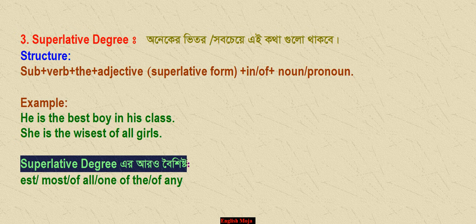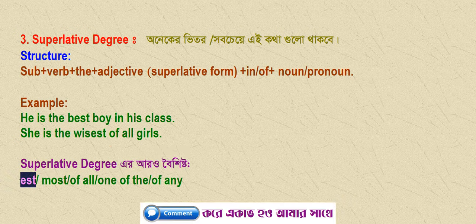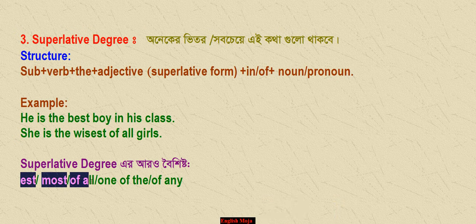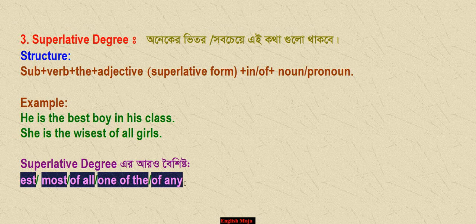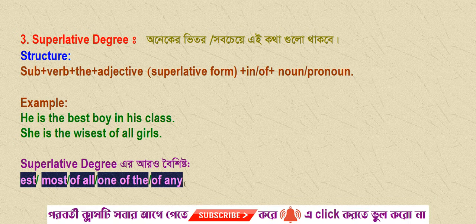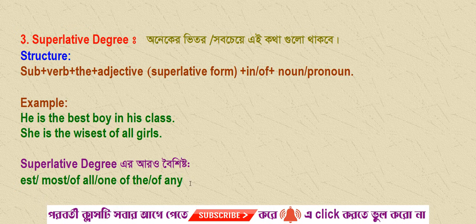The superlative degree is the most important thing. The adjective adds 'EST' or uses 'most' before the adjective. Sentences with superlative use 'one of the' or 'the' before the superlative form. To summarize: positive degree is the simplest level, comparative degree compares two things, and superlative degree ranks highest among all.